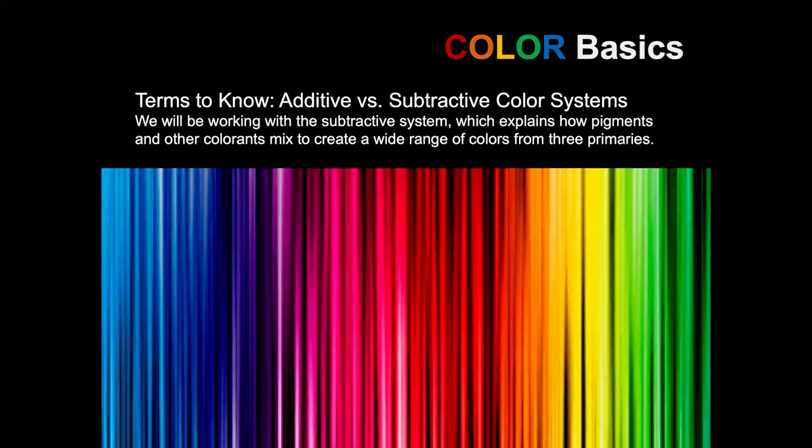First of all, there are two basic approaches to color systems: the additive and the subtractive, and we will be working with the subtractive system. That's the system which explains how pigments and other colorants mix to create the wide range of colors that we get from our three primaries, which are blue, red, and yellow in the subtractive system.